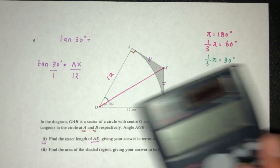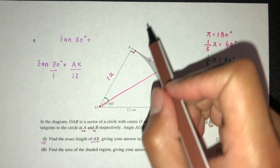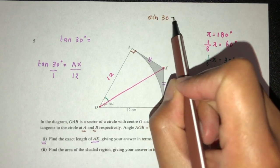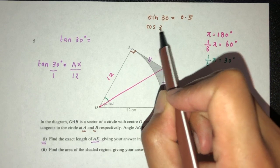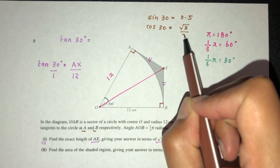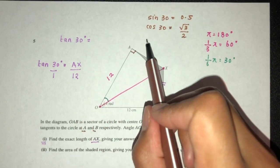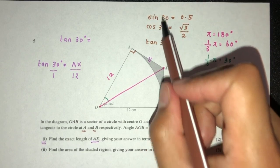I do know cos 30 is equal to √3 over 2. If I want to find the value of tan 30, I will just do sine divided by cosine. So 0.5 divided by √3 over 2.